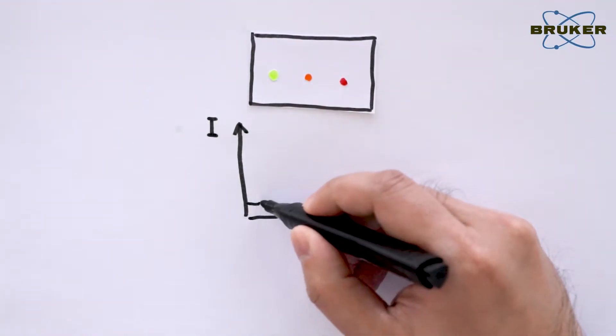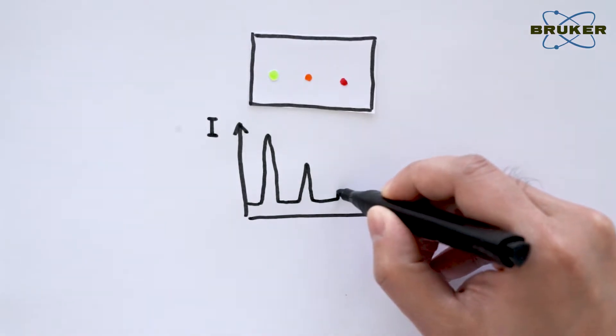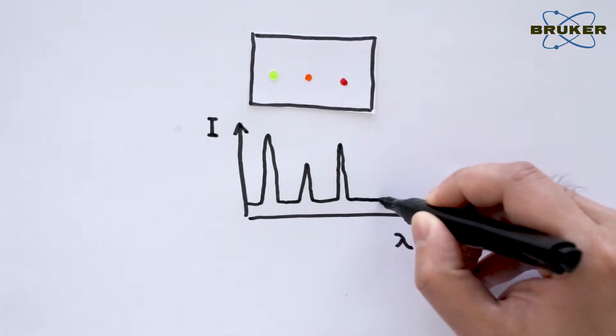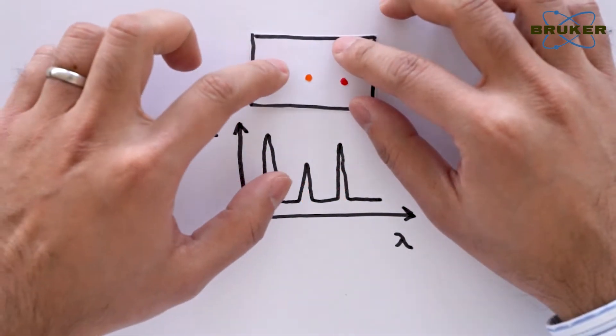Of course, it can tell us the photons' wavelengths, but we can also count the number of photons. The more photons reach the CCD, the higher the light intensity, and eventually, the brighter the spot.